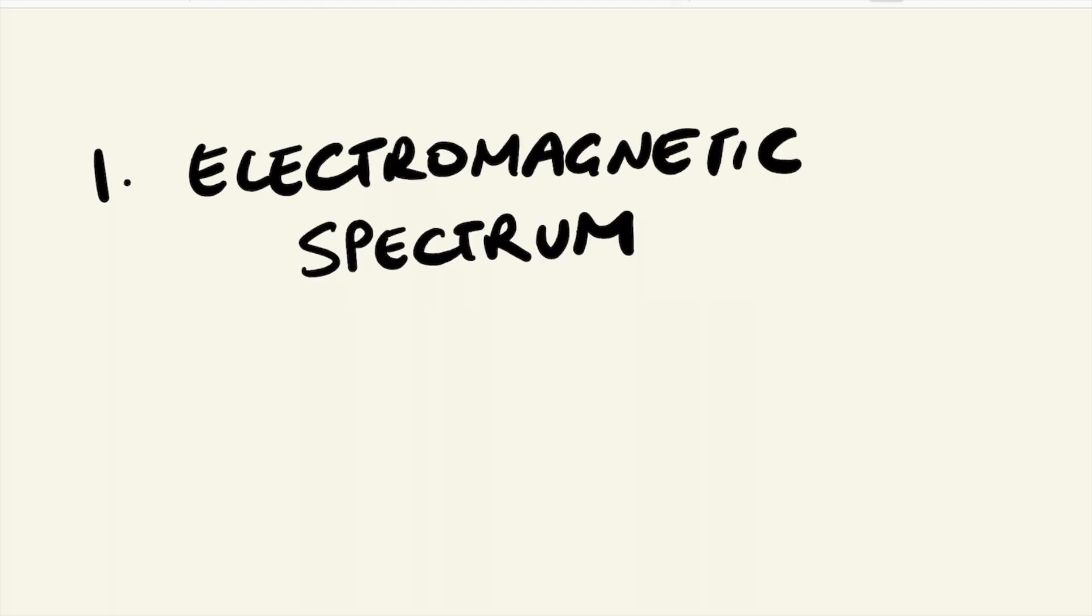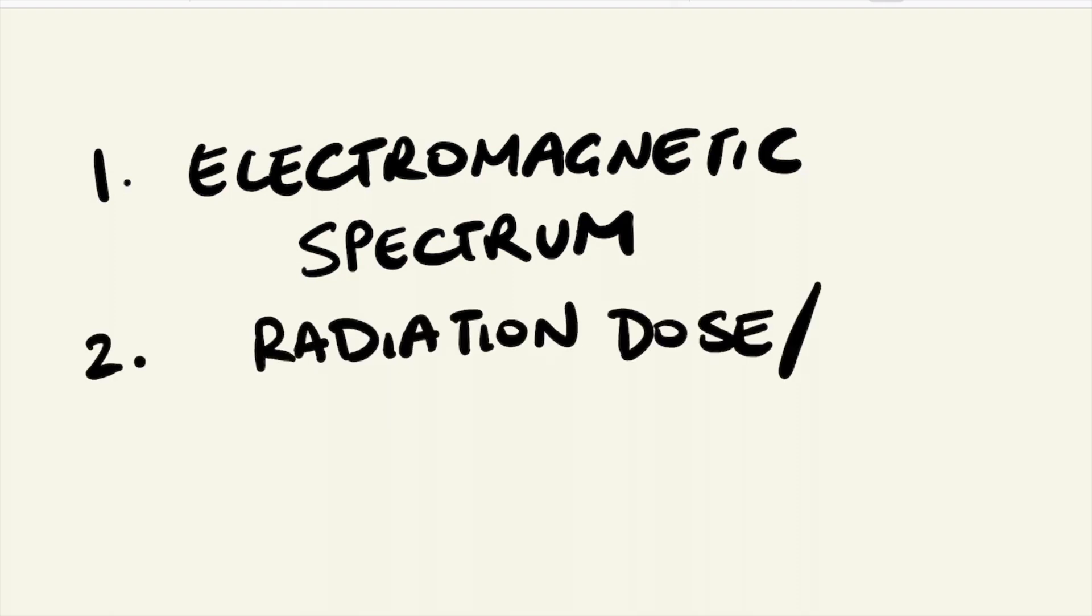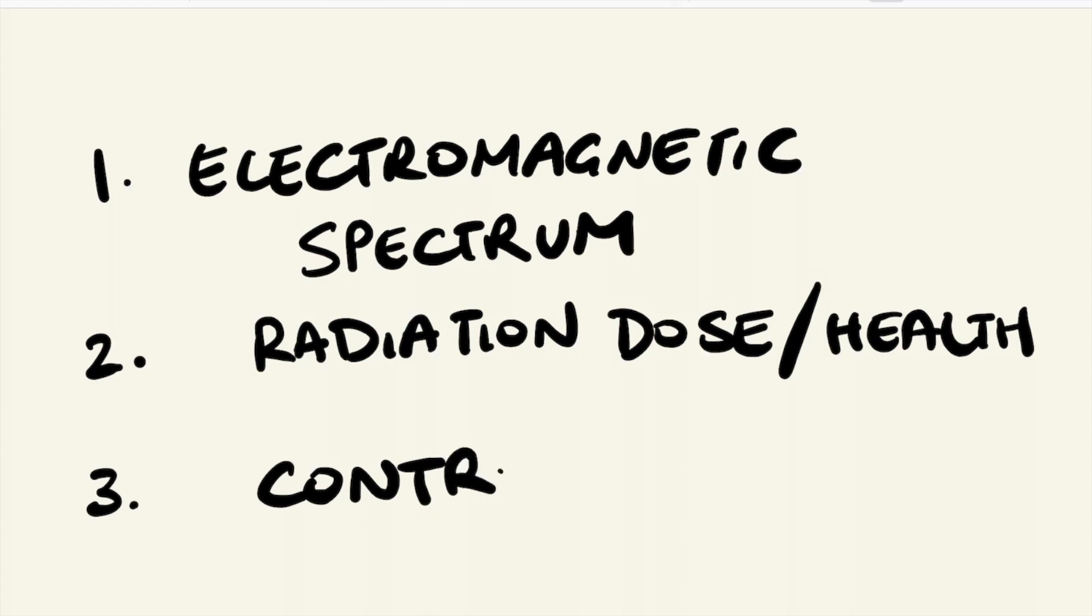I will go over three main topics: a brief overview of the electromagnetic spectrum, in particular ionizing radiation; how we determine radiation dose; potential health effects of radiation and current dose limits; and the types of controls that should be in place to minimize exposure.